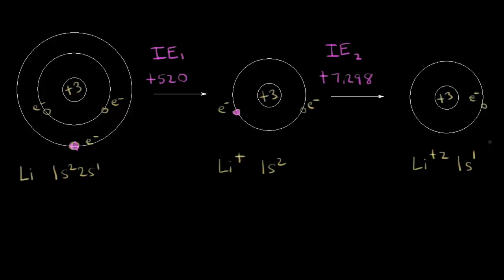We can see that there's a big difference between the first ionization energy and the second ionization energy — 520 versus 7,298. Let's explain the reasoning for this extremely large difference using the three factors discussed in the previous videos. The first factor is nuclear charge, which refers to the number of protons in the nucleus. Both the neutral lithium atom and the lithium +1 cation still have three protons, so we need to think more about effective nuclear charge, and before that, we have to consider the effect of electron shielding.